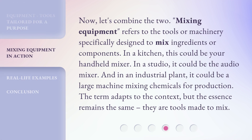Now, let's combine the two. Mixing equipment refers to the tools or machinery specifically designed to mix ingredients or components. In a kitchen, this could be your handheld mixer. In a studio, it could be the audio mixer. And in an industrial plant, it could be a large machine mixing chemicals for production. The term adapts to the context, but the essence remains the same — they are tools made to mix.